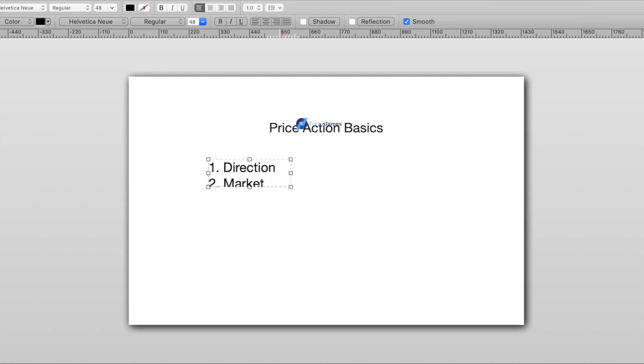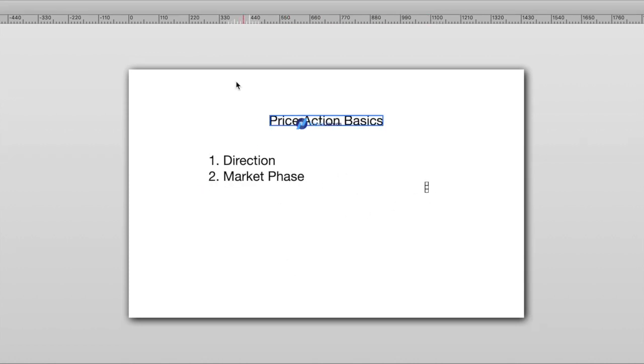Once you're able to identify direction and identify the market phase we're in, this is when I'm going to the lower time frames to look for my levels—my supply and demand, or my support and resistance, or my support turning into resistance, or my resistance turning to support—but I would trade it with direction.